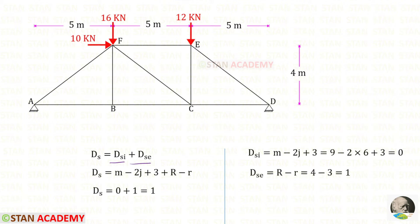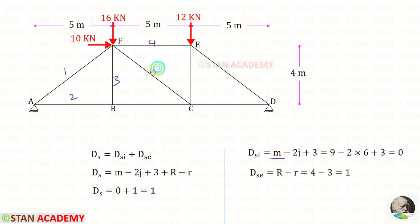To find DSi, that is internal static indeterminacy, this is the formula. Here M is the number of members. Let us count the members: 1, 2, 3, 4, 5, 6, 7, 8, 9. So M is 9.